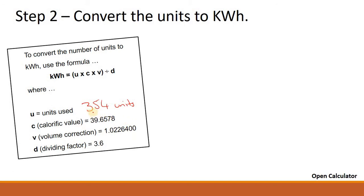Because in the question, you will be given all of this information. The only one you have to find is U, the units you've used. And of course, we've done that in the previous step. So we know what U is. We know what this thing C is: 39.6578. We know what V is. We're given it: 1.0226400. And D is 3.6. We're given all this information.